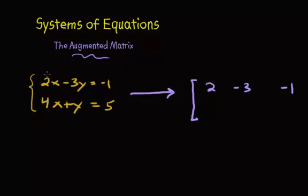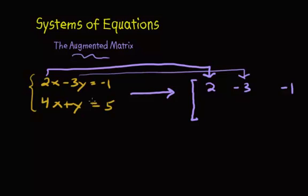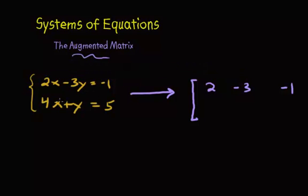So, notice all I did was I took the 2 and put it there from the x, and I took the negative 3, and then here's the negative 1, which I put over here. Okay, so let's do that with the second equation. We have the 4, we have the 1, and then we have a 5. And then we normally put this vertical line separating the coefficients from the variables and then from the constants. Now, we end that bracket, and there's our augmented matrix.